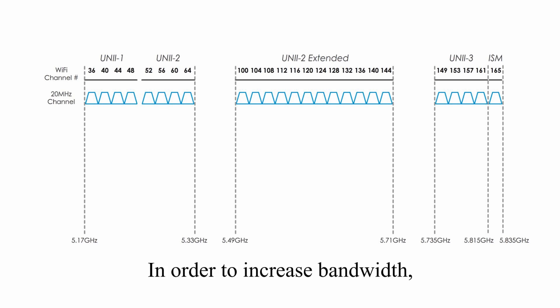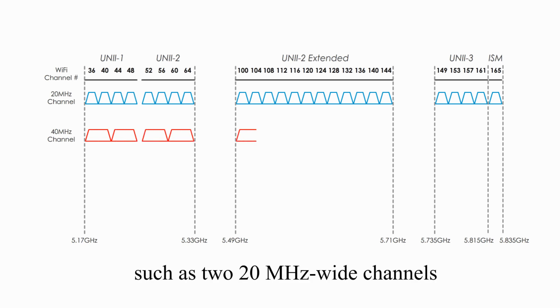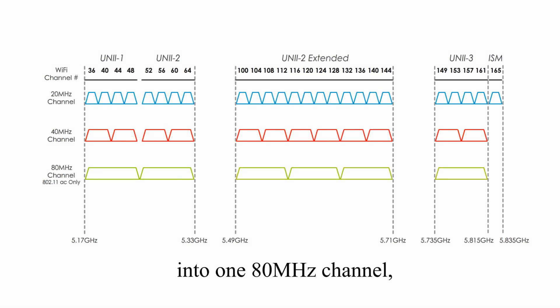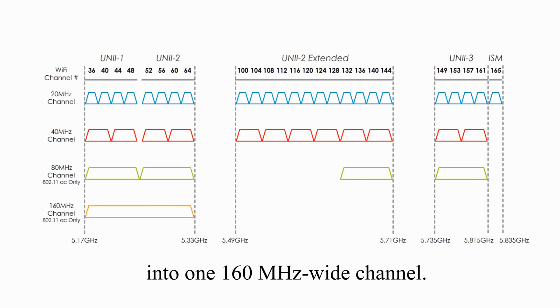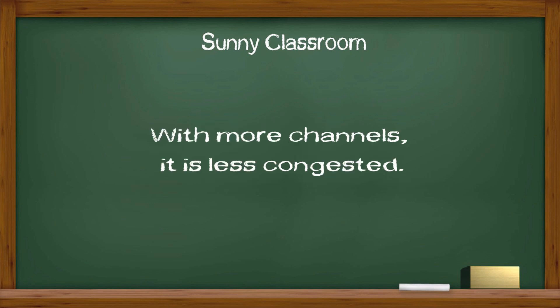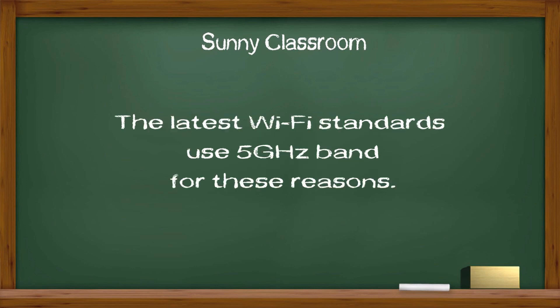In order to increase the bandwidth, starting from 802.11N standards, channel bonding is a common practice where two adjacent channels are combined into one wider channel, such as two 20 MHz wide channels combined into one 40 MHz channel. In 802.11AC standards, two 40 MHz channels are combined into one 80 MHz channel. Even two 80 MHz channels are combined into one 160 MHz wide channel. In summary, 5 GHz band provides faster data transfer rates, with more channels is less congested. The latest Wi-Fi standards use 5 GHz band for these reasons.